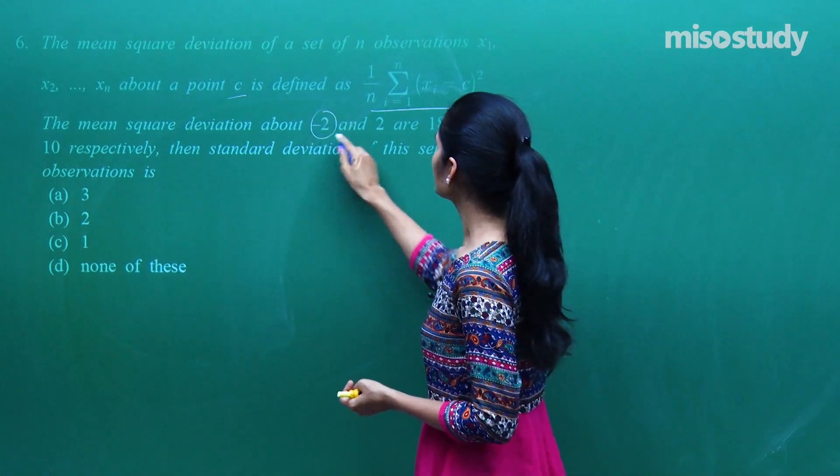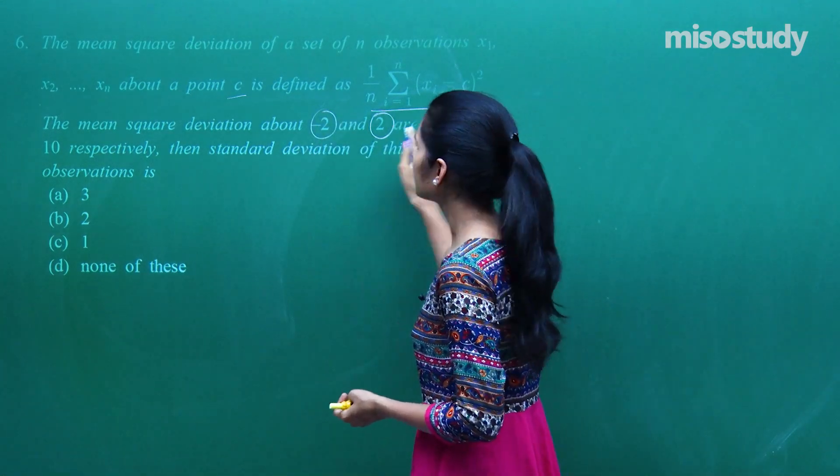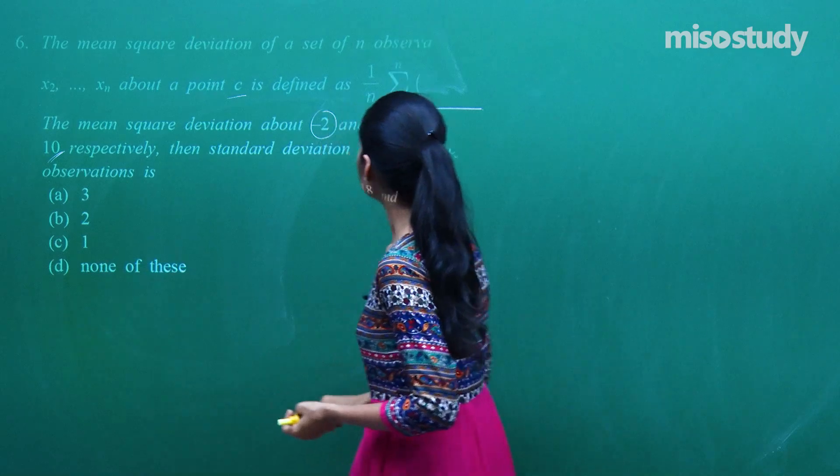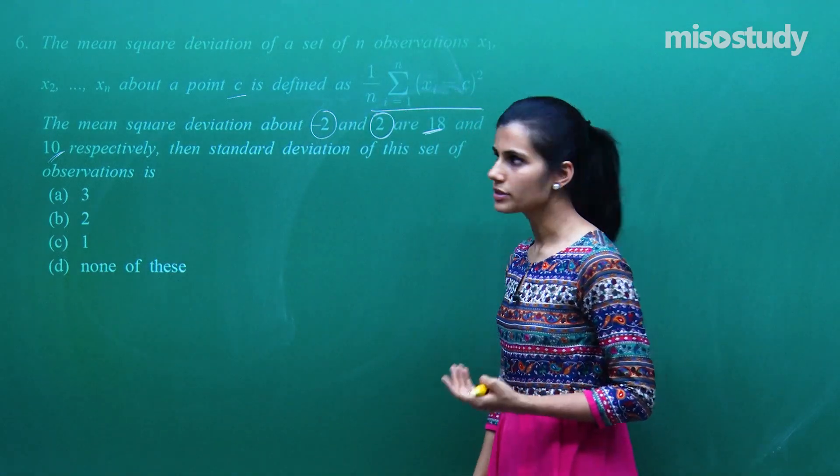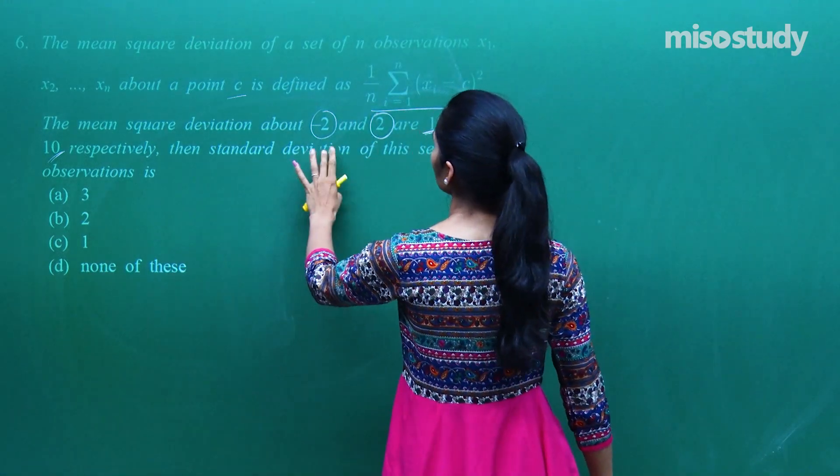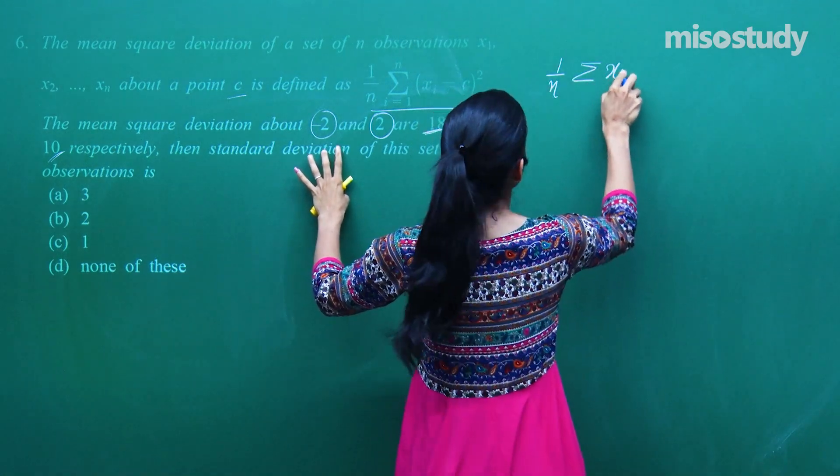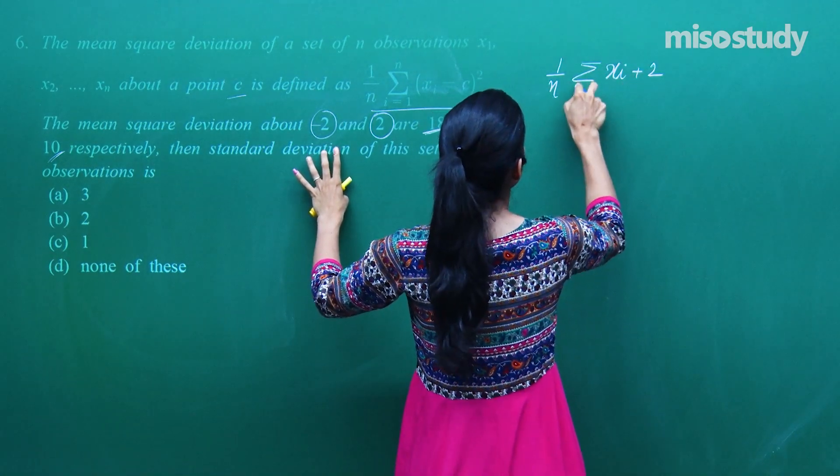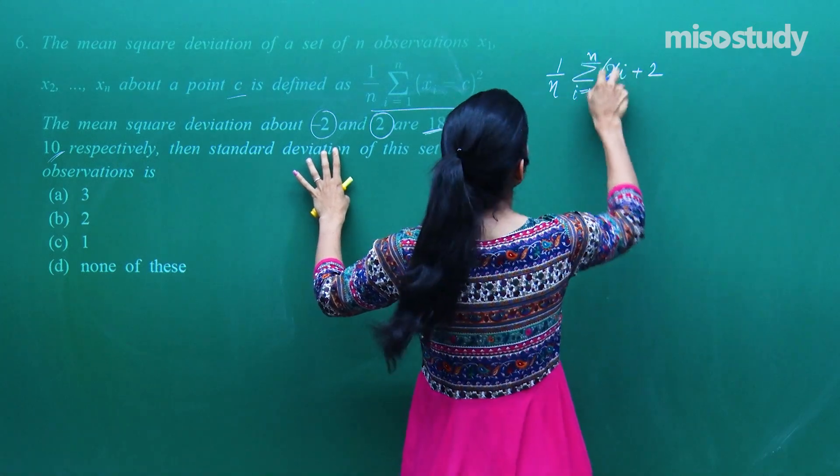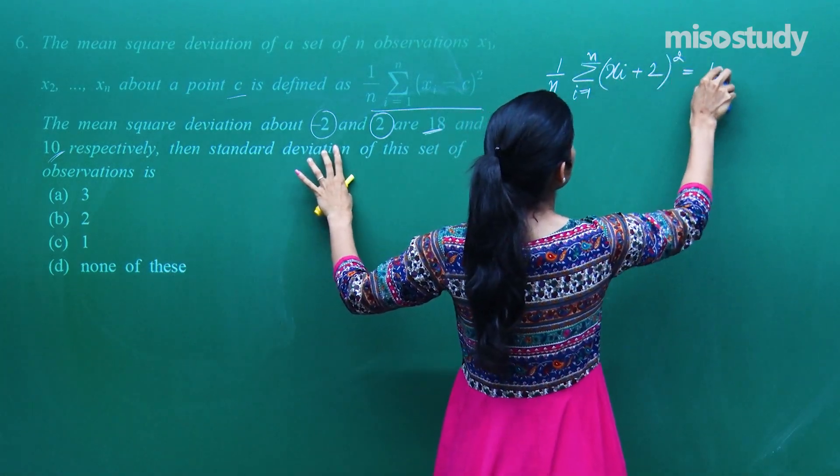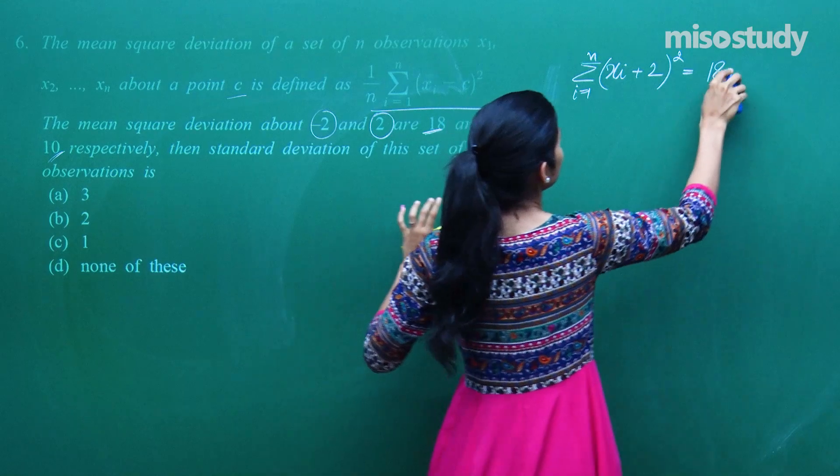Toh mean square deviation about minus 2 and about 2 are respectively given to be 18 and 10. Then standard deviation of the set of observations is what? What is mean square deviation about minus 2? It will be 1 by n summation xi minus minus 2, i going from 1 to n. And this is ka whole square. This is given to be 18. So this will be 18n.